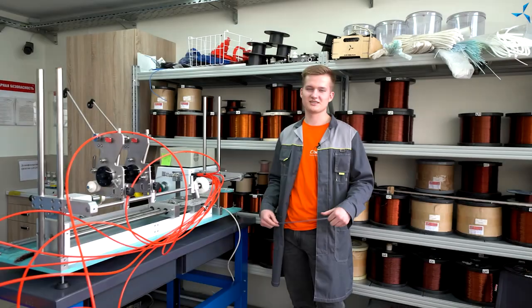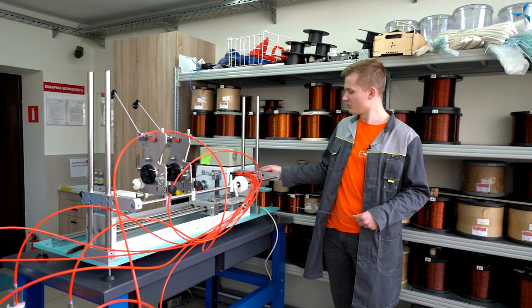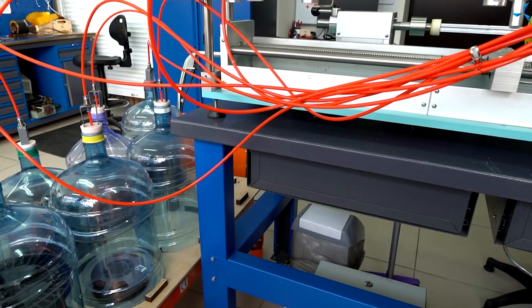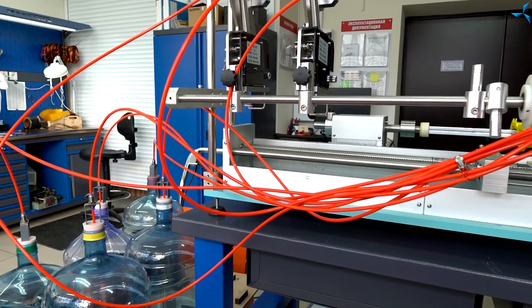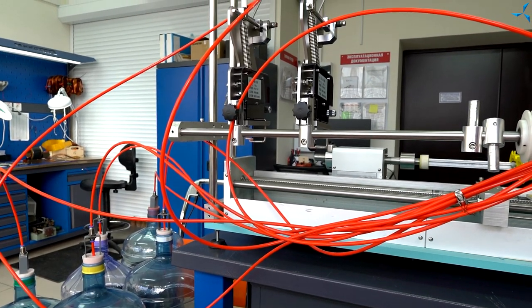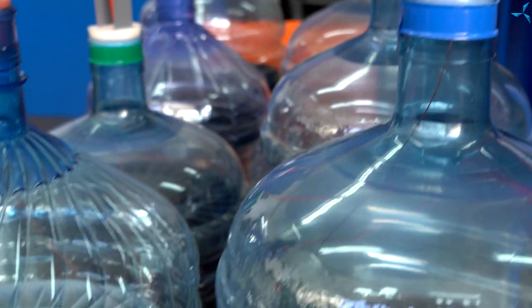This unit is the heart of the winding area. It is used for winding coils. The unit is programmable, high speed. We have modified it in order to wind coils with several wires at once. We have developed this system here.